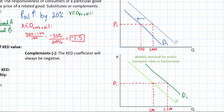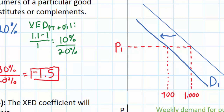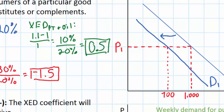Now we have the information needed to calculate the cross elasticity of demand between public transportation and oil. First, let's calculate the percent change in the quantity of public transportation rides: we take the new quantity of 1.1 million, subtract the original quantity of 1 million, and divide by the original quantity of 1 million. This gives us a 10% increase in public transportation rides as a result of a 20% increase in the price of oil, giving us an XED coefficient of 0.5. Indirectly, oil and public transportation are substitutes for each other, since people will opt to take more public transportation when oil prices rise — that by definition makes them substitutes. Therefore, the XED coefficient will always be positive for substitutes.